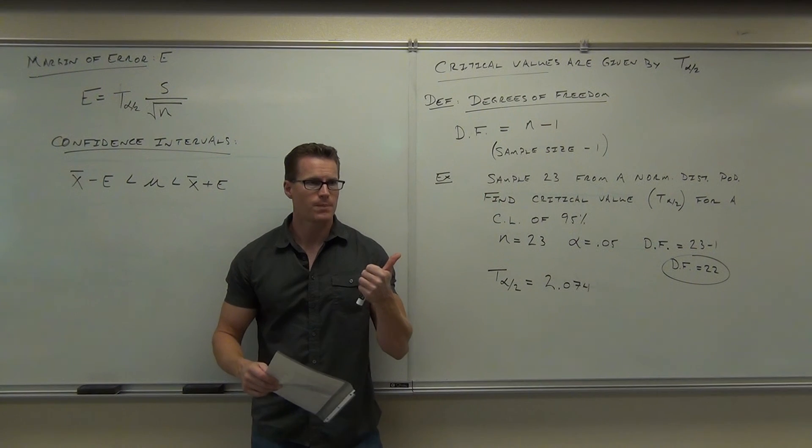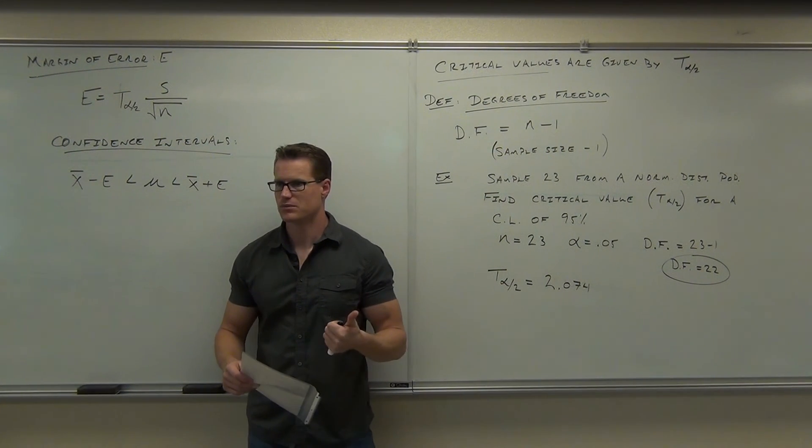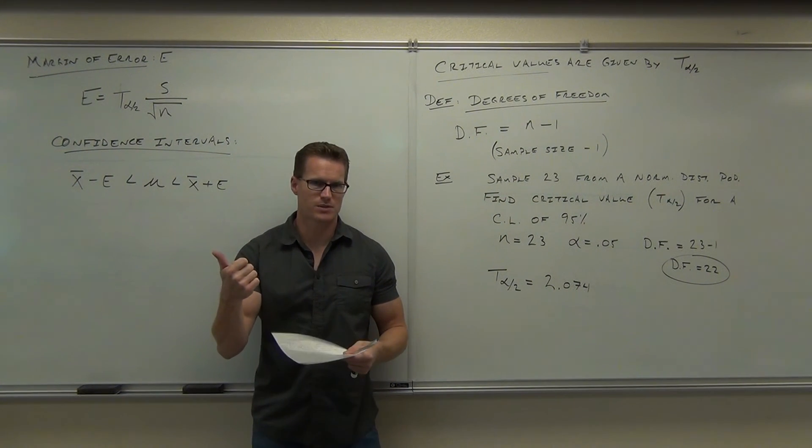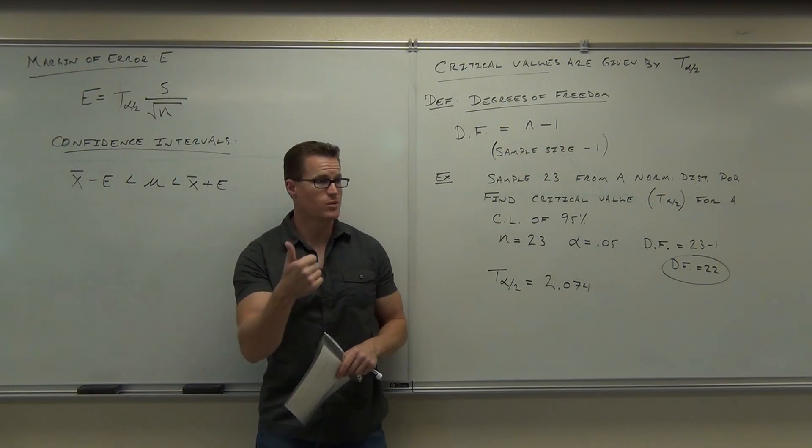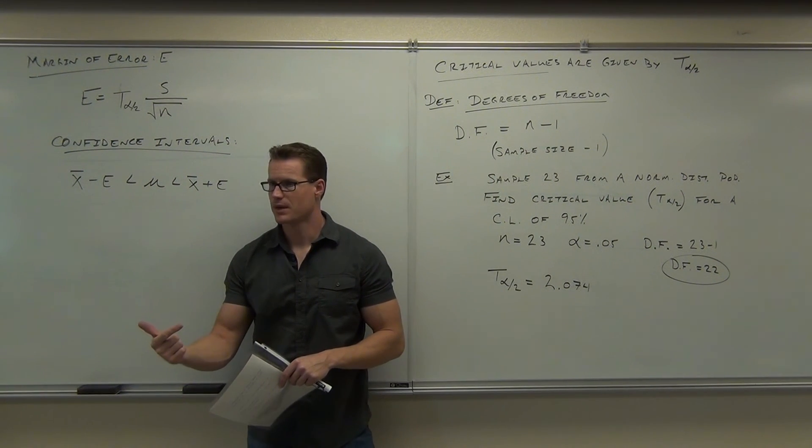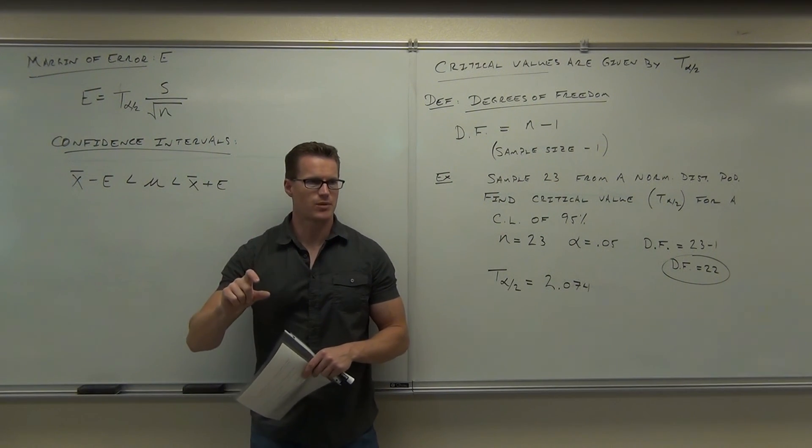You okay so far? Now I normally list out the steps, but honestly the steps are exactly the same as the last one. Number one, you're going to check to see if your requirements are met, same as last section. For this you need: obviously random sample, the n has to be bigger than 30, or if it's not, has to come from a normally distributed population.